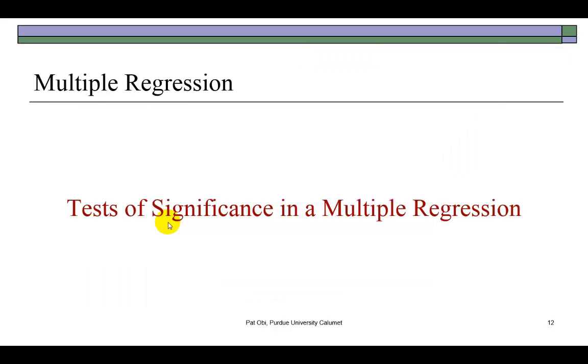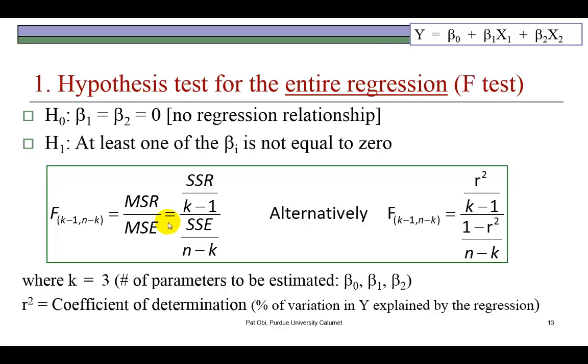The test of significance in multiple regression is very important because there are two separate tests. The more important of the two is the hypothesis test for the entire regression, and that's carried out using the F-test.